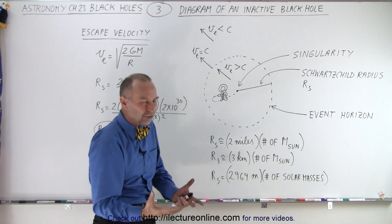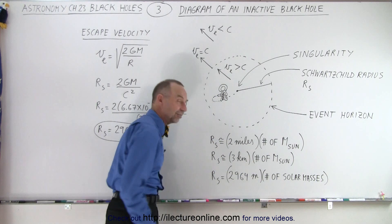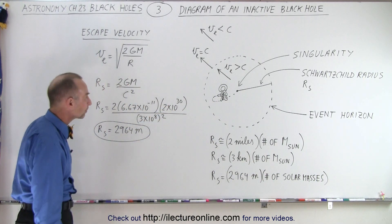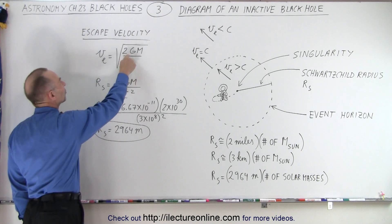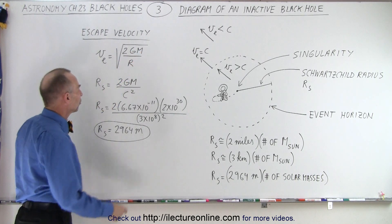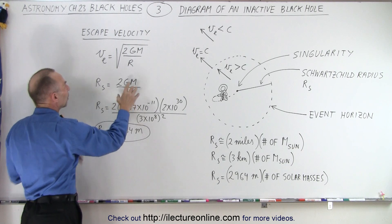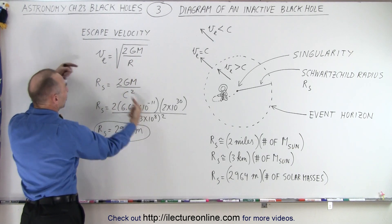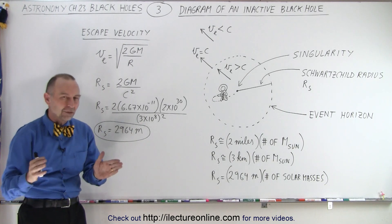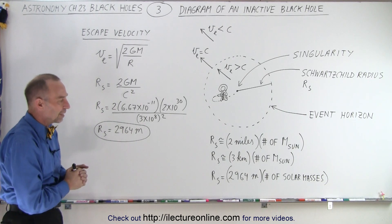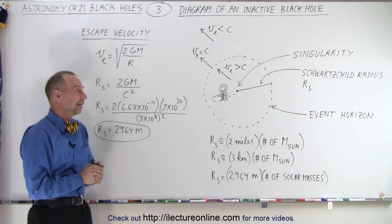Those are approximate values to make calculation easier. The exact value is 2964 meters times the number of solar masses — slightly less than three kilometers and a little less than two miles. To derive this, we look for the escape velocity: the square root of two times G times the mass divided by the radius. We solve for the radius, set the velocity equal to the speed of light c, square both sides, exchange r and c squared, and we get 2964 meters — that's the Schwarzschild radius. But for our purposes, two miles or three kilometers is good enough.